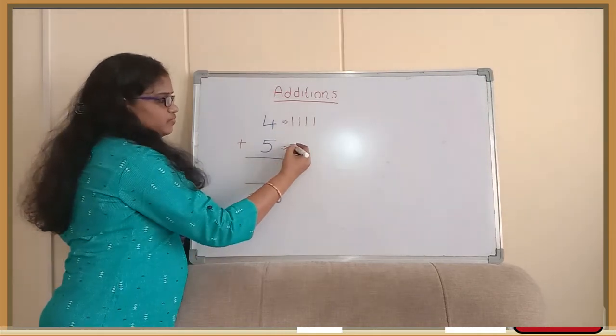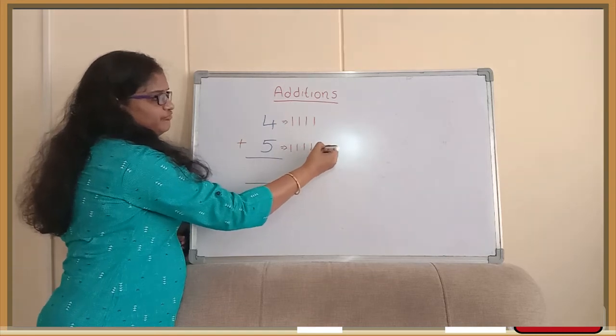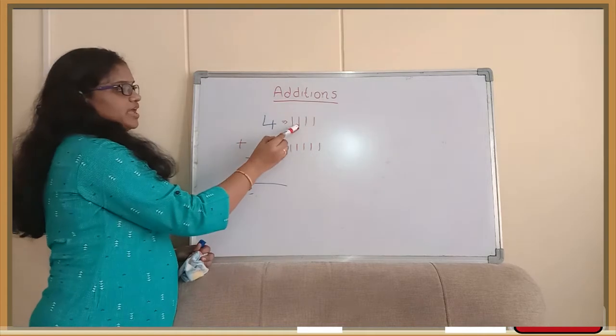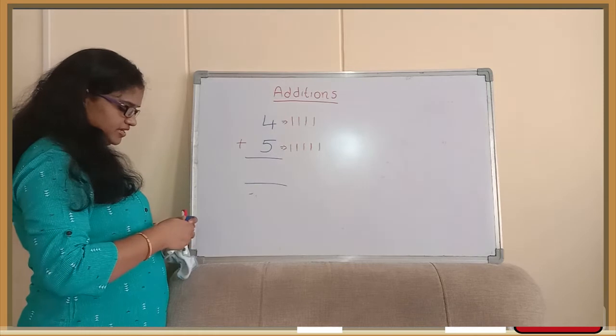Similarly, 1, 2, 3, 4 and 5. Here we are having 4 lines. And here we are having 5 lines. So total how many are there?